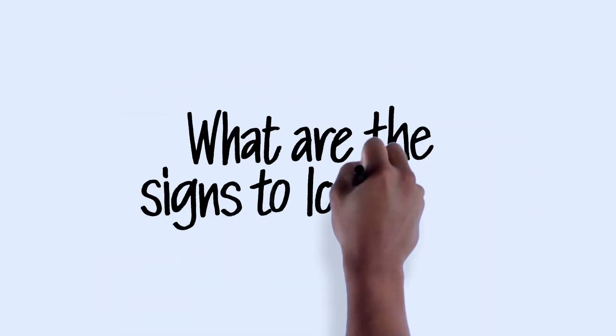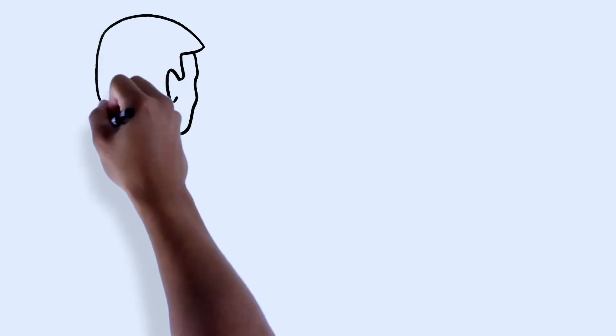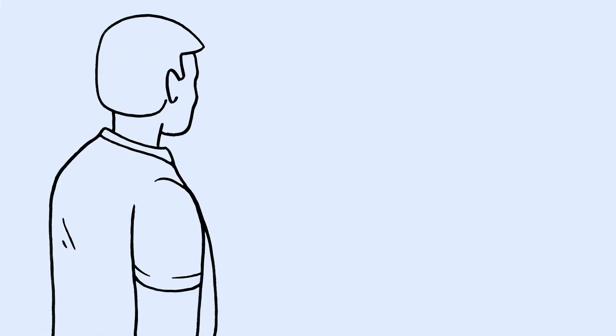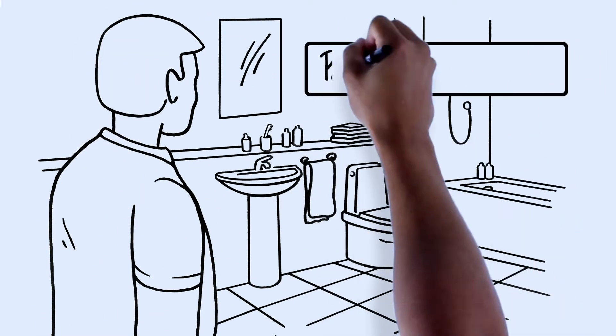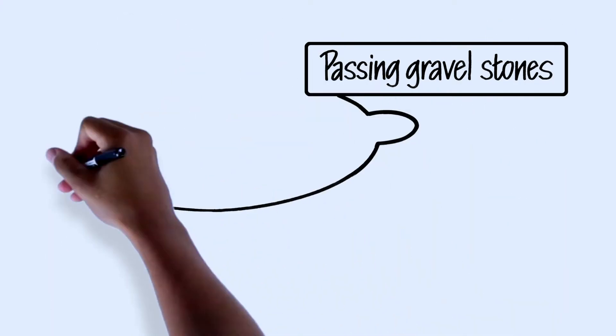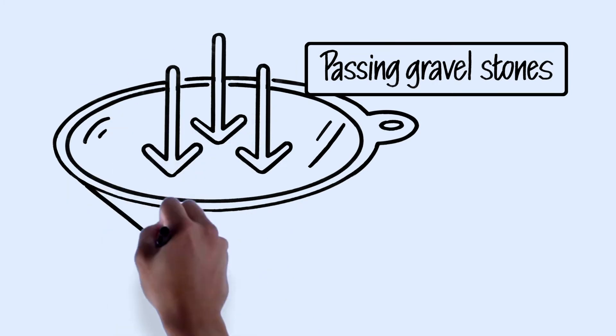What are the signs that Tyler looks for? One sign is passing gravel, small kidney stones, in his urine. Passing gravel may or may not be painful. They also may be difficult to see in urine.